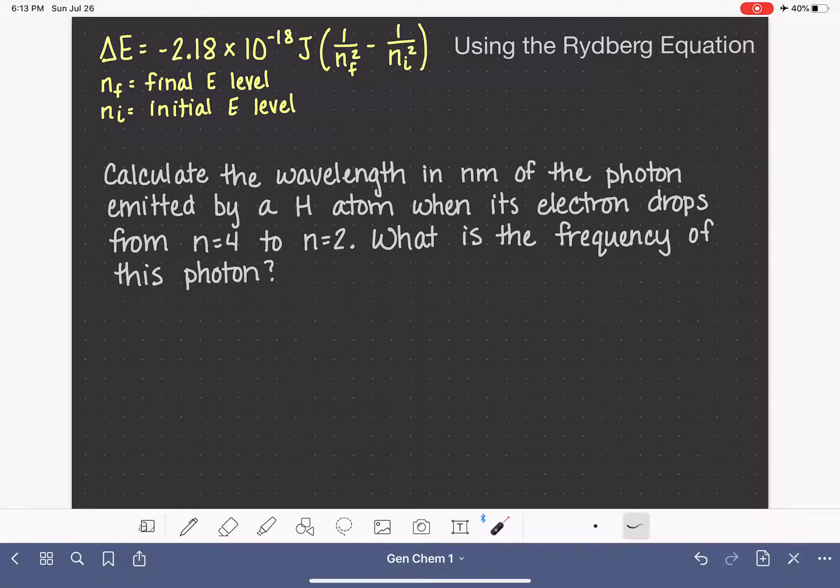We are able to calculate the exact amount of energy that is absorbed or emitted by an electron in a hydrogen atom as the electron moves from one energy level to another. This equation is called the Rydberg equation.